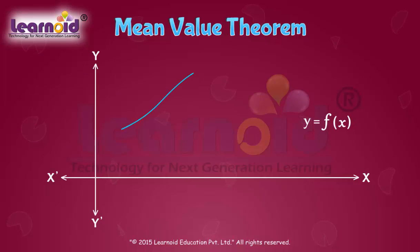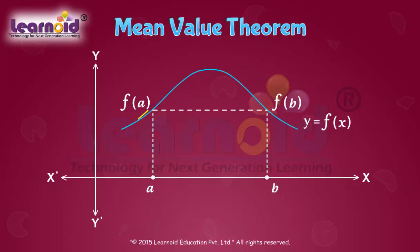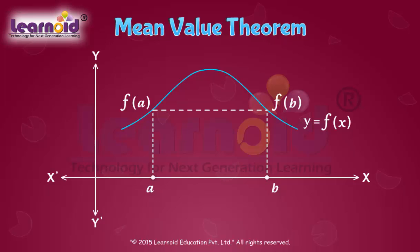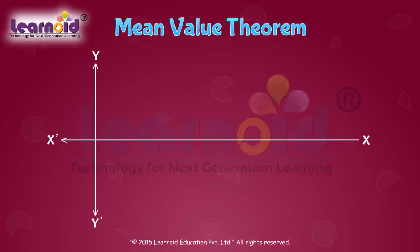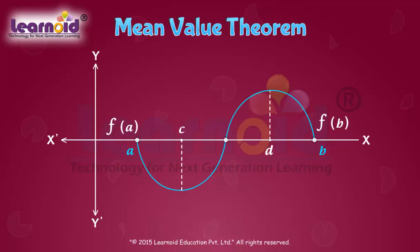Let y = f(x) be a curve. a and b are two points at which f(a) is equal to f(b). The slope of the tangent at any point on the graph of f(x) is represented by the derivative of f(x) at that point. The derivative at point c equal to 0 means the tangent is horizontal. Rolle's Theorem indicates that the value of a continuous function will be equal at another point only when it goes up or down and then comes back to the same point. At the highest or lowest point on these graphs, the slope of the function is equal to 0.